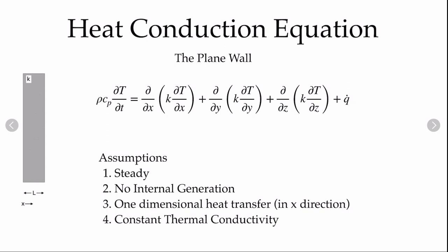We'll start with the heat conduction equation in Cartesian coordinates derived previously. For the plane wall we make four assumptions to simplify our equation. First, the problem is steady, so the time-dependent term goes to zero. Second, there's no internal generation, so the volumetric generation term goes to zero. Third, the problem is one dimensional — we keep the x direction and all derivatives in y and z go to zero as well.